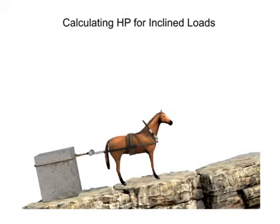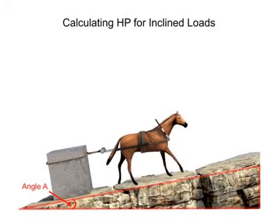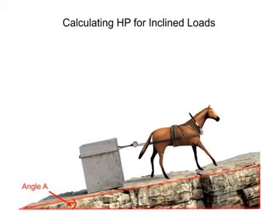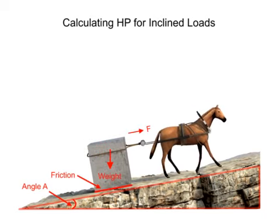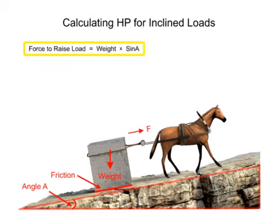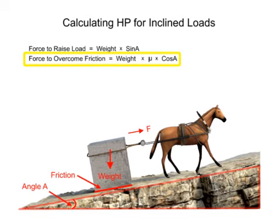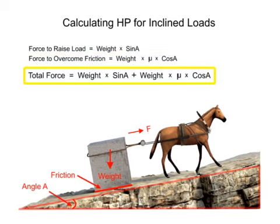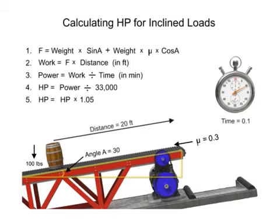If the distance to be traveled isn't on a horizontal surface, the angle of the surface must be taken into account. To determine the total force required, we must add the force required to raise the load to a higher elevation with the force required to overcome friction. The total force is equal to the weight times sine A, plus the weight times the coefficient of friction times cosine A. Once these two forces are combined, we can continue with the same steps used previously to calculate the size of the motor required.